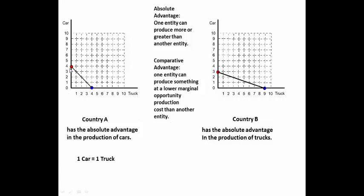In this situation, it's a one-to-one ratio, so if you want to produce one truck, you have to give up the production of one car, and so forth. If you want to produce an additional truck, you have to give up the production of an additional car. It's a one-to-one ratio.